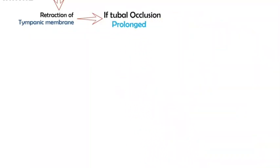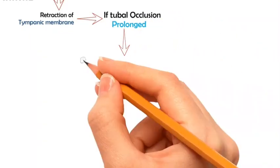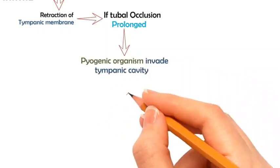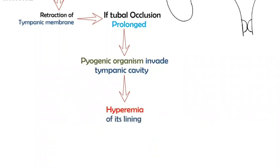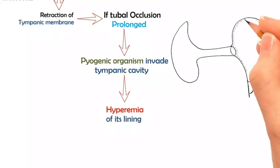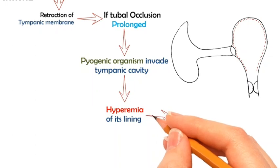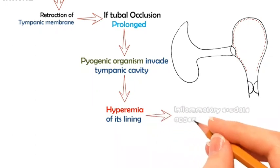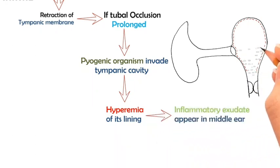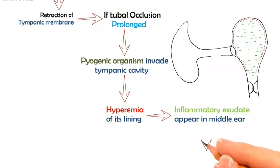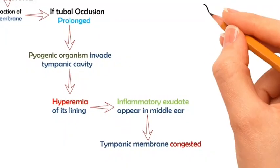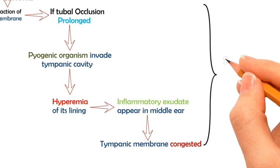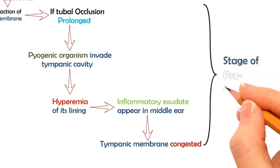If there is prolonged tubal occlusion, the tympanic cavity may be invaded by pyogenic organisms, which will cause hyperemia of the mucosal lining of the middle ear cavity. Inflammatory exudates start appearing in the middle ear cavity and the tympanic membrane may appear congested. This is called the stage of pre-suppuration.